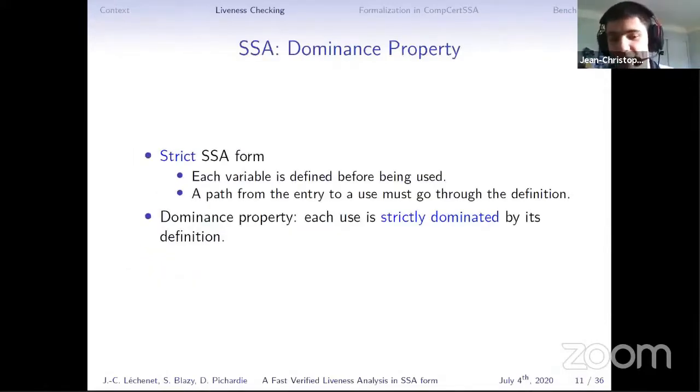The property of SSA that justifies the liveness checking approach is a dominance property. If we consider a somewhat restricted form of SSA, strict SSA where we forbid undefined variables, in strict SSA, we can say that each variable must be defined before being used. And if we rephrase that, a path from the entry to a use must necessarily go through the definition of the variable. And actually, here we can see the definition of dominance. So in strict SSA form, we have this dominance property that each use is strictly dominated by its definition.